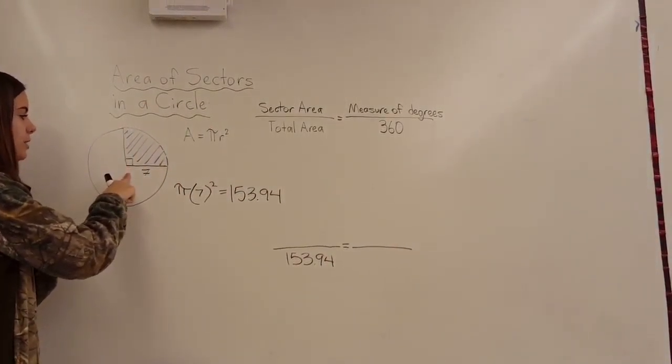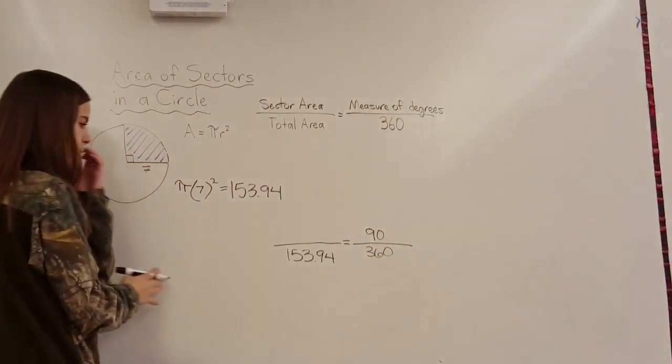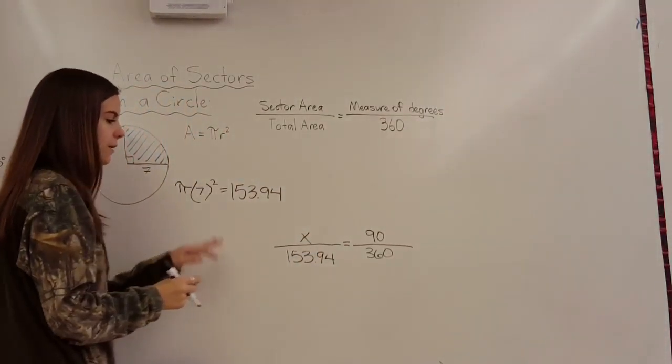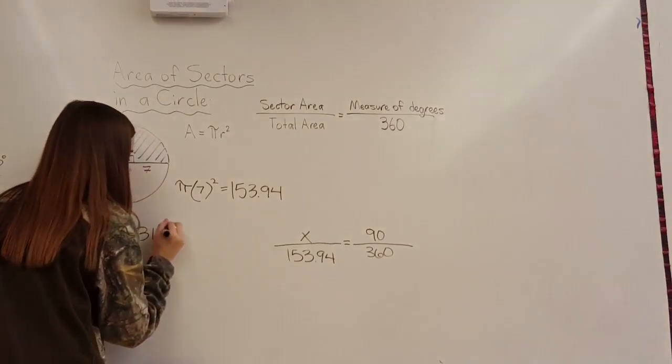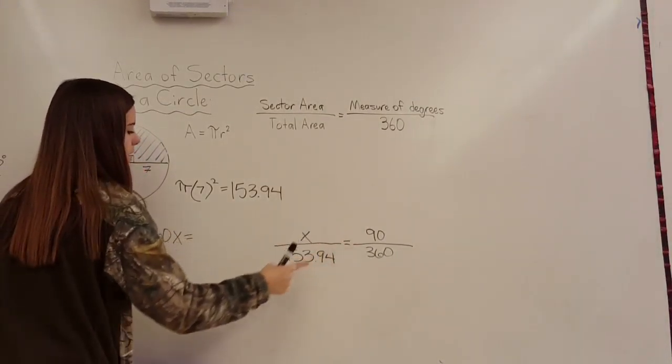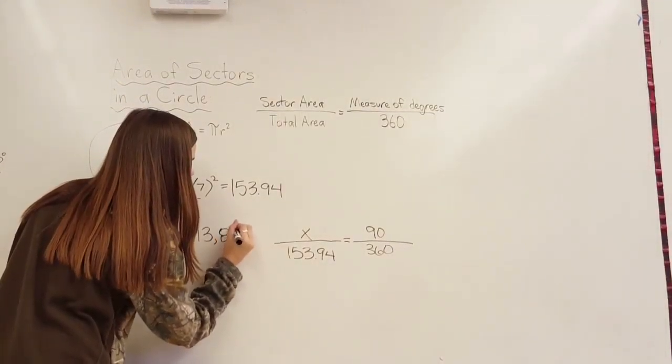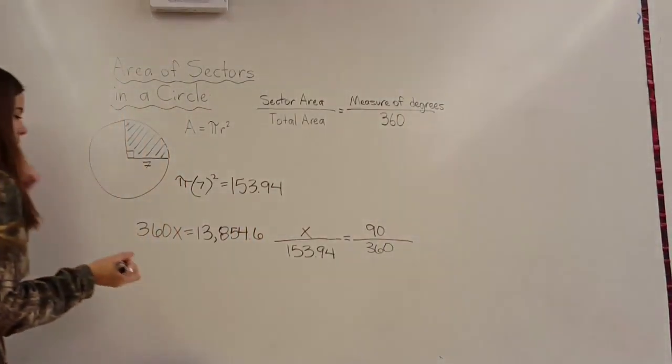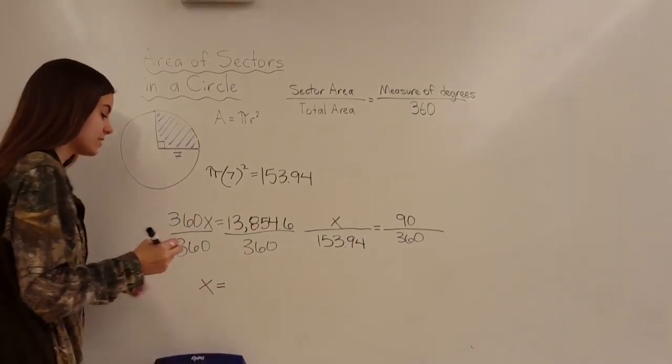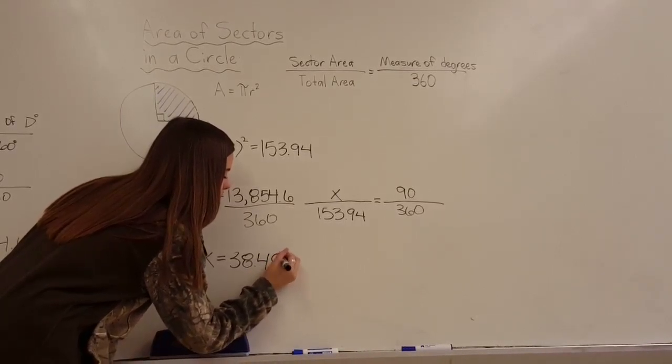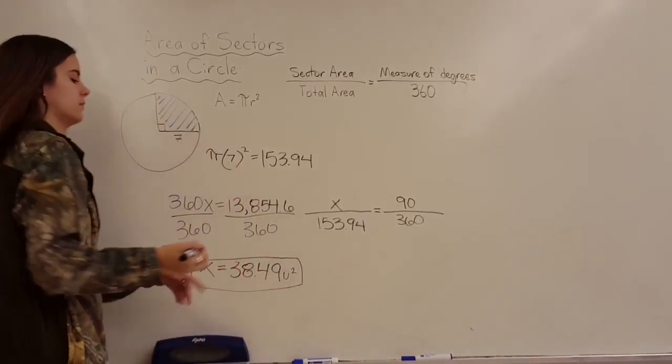Now, you see there's a right triangle here, so that's how we know it's a 90 degree angle. So we have that here over 360 degrees. And now we just put an x here for our sector area. Now, what we can do is just cross multiply all of this out and then solve it. So that will be 360x equals 90 times 153.94, which will come out to be 13,854.6. And now we divide by 360. And the answer is 38.49 units squared. And don't forget to add your unit squared on that end. And that is your sector area.